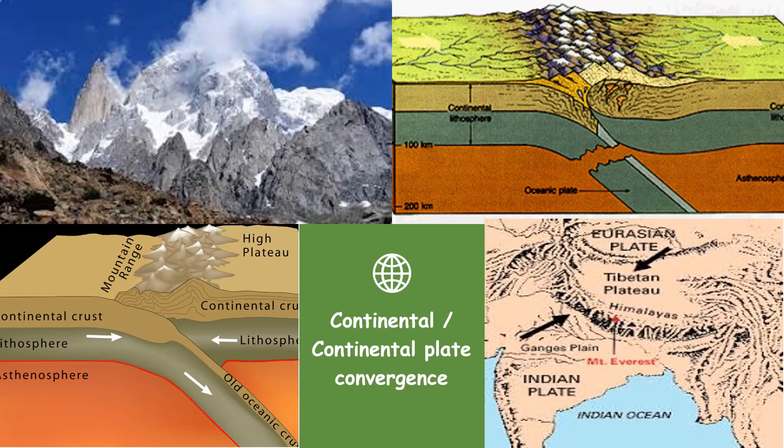For continental-to-continental convergence, subduction ceases to exist. Instead, it is replaced by what is called a collision zone, where the crust is pushed upward. This process gives rise to the famous Mount Everest in the Himalayas. There is no subduction zone because both plates are made up of dense material.